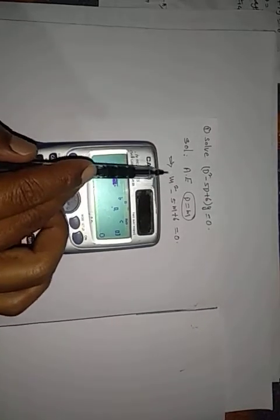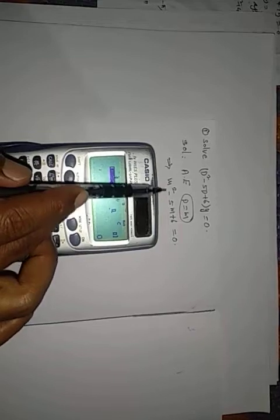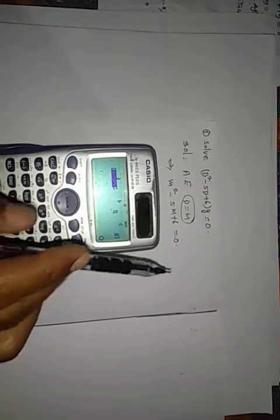Now, observe the quadratic equation. A, B, C. A means m square coefficient. B means m coefficient. C means constant.